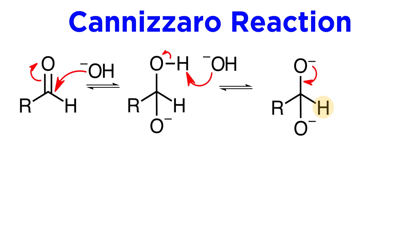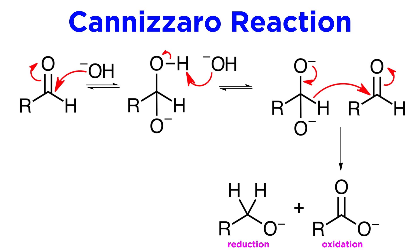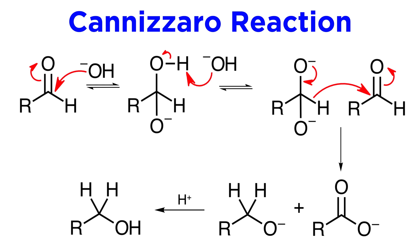The key step is the irreversible expulsion of a hydride from the dianion. The hydride is passed along to a second molecule of neutral aldehyde, forming the corresponding carboxylate and alkoxide. In this way, the aldehyde oxidizes while reducing another molecule. Finally, a water molecule will protonate the alkoxide to give the alcohol.